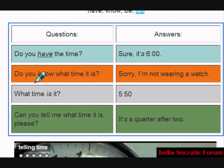How do we ask a question so that we can ask the time or tell the time? The four verbs are have, know, be, and tell. Let's see how the questions are asked and follow them up with the appropriate answers.